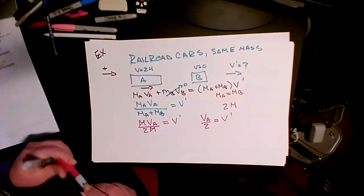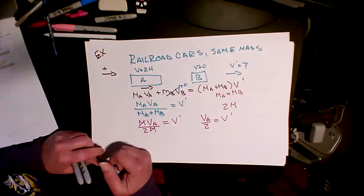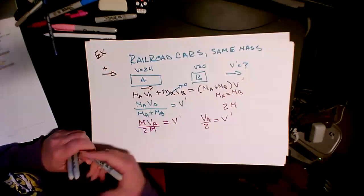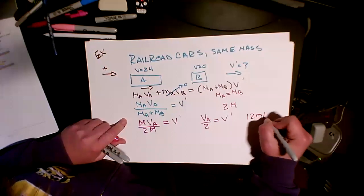So hopefully that doesn't sound too shocking to you, that it's just half of the initial velocity is what these things will have in the end. So this would be one-half meters per second for V prime.